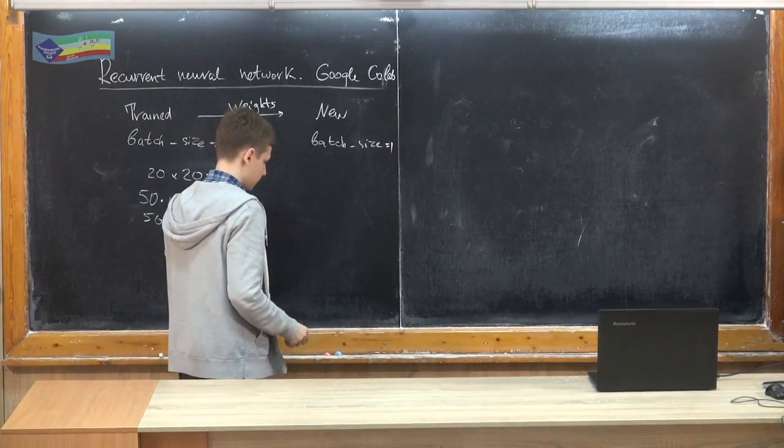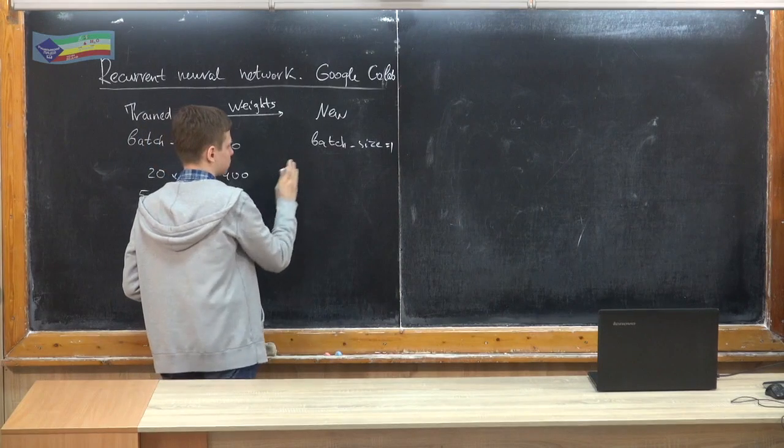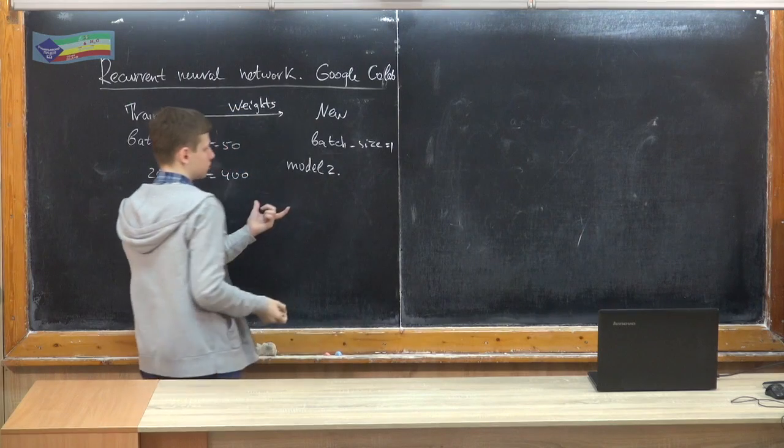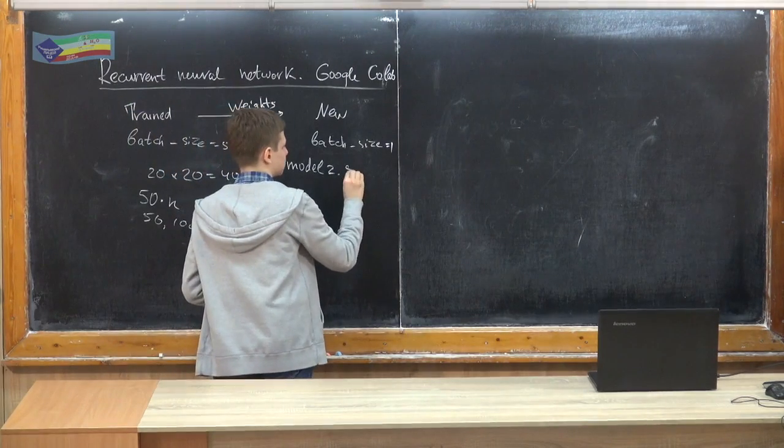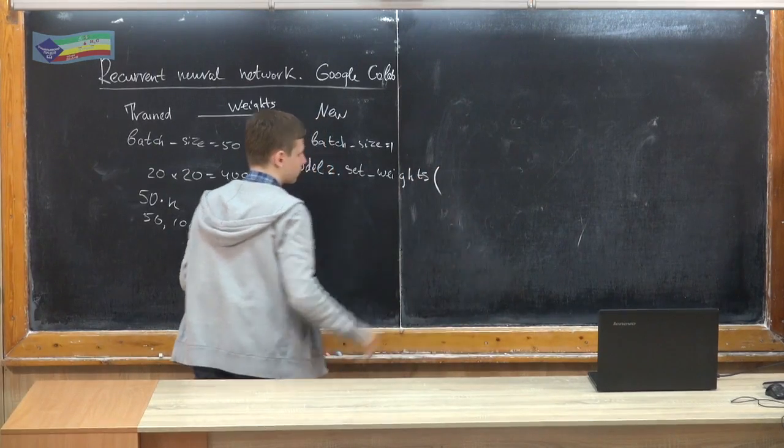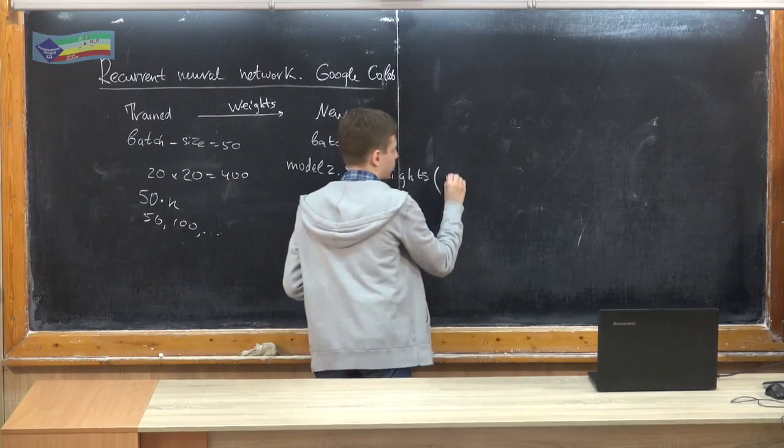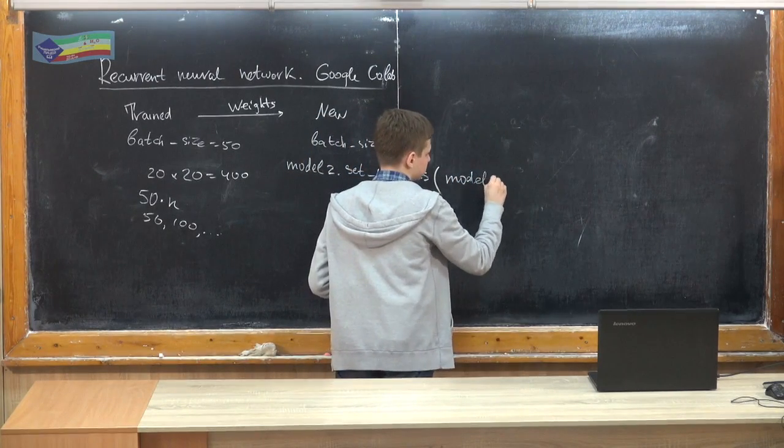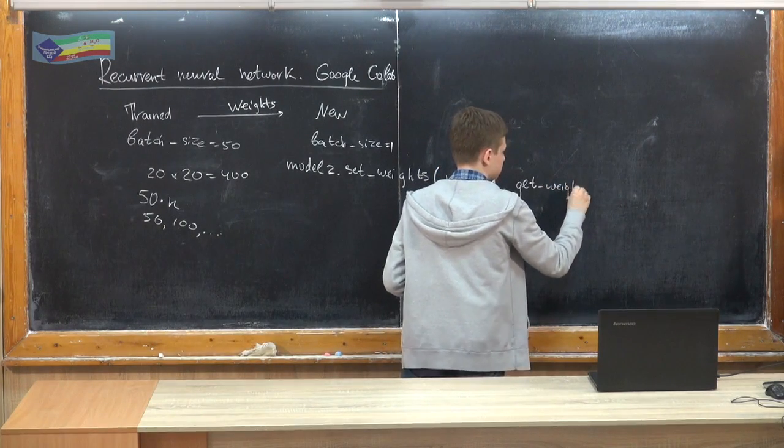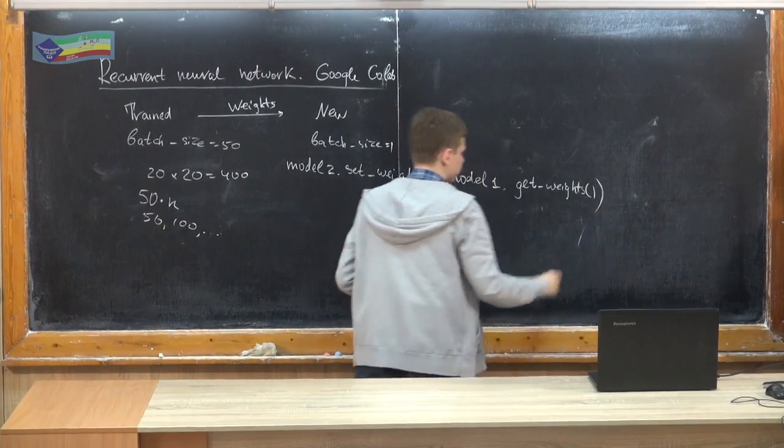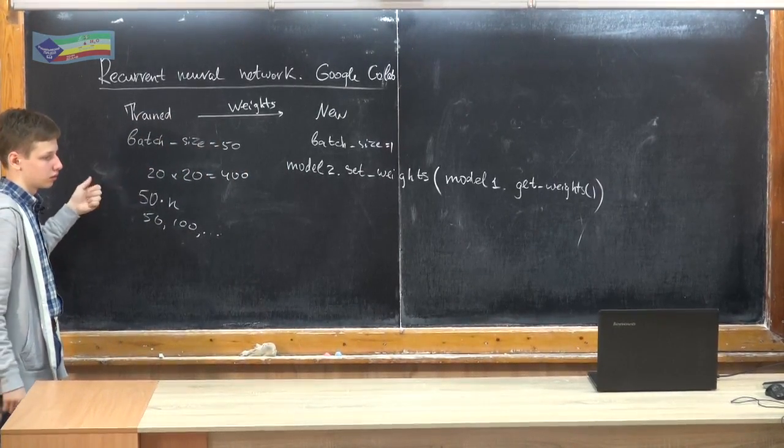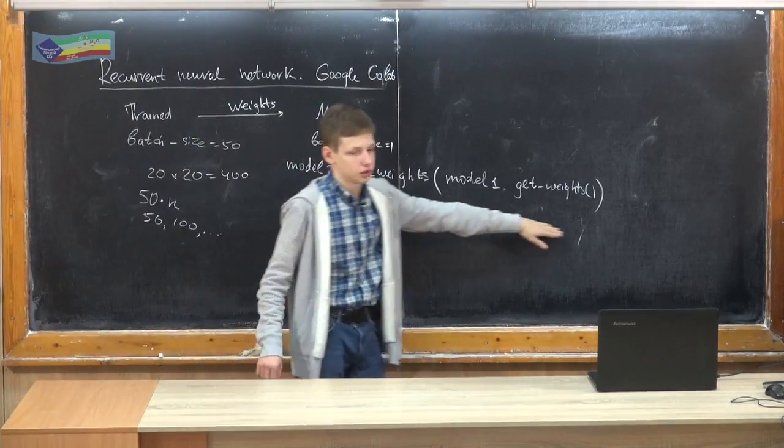In that case, we can use this network with one parabola or two or what we want. And then we just carry over weights from the trained network to the new one. This is done by a special function called model2.set_weights, and then we get weights from model1. So this is our model1, it's already trained.